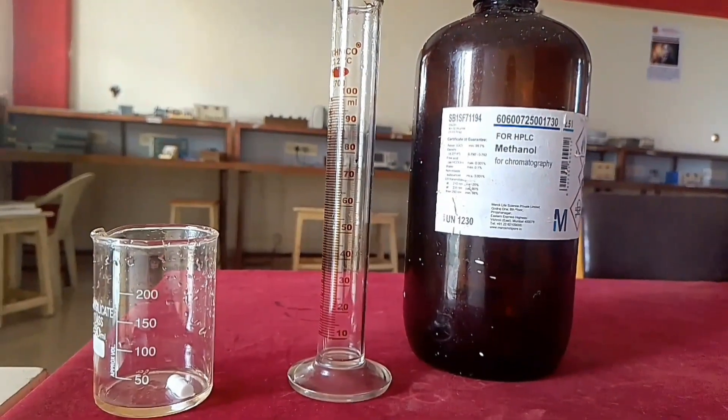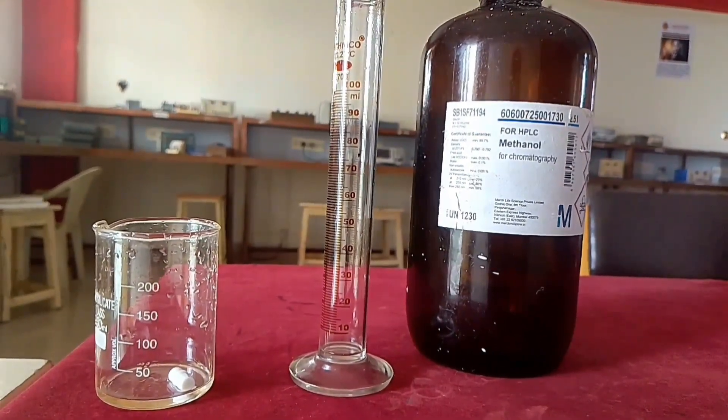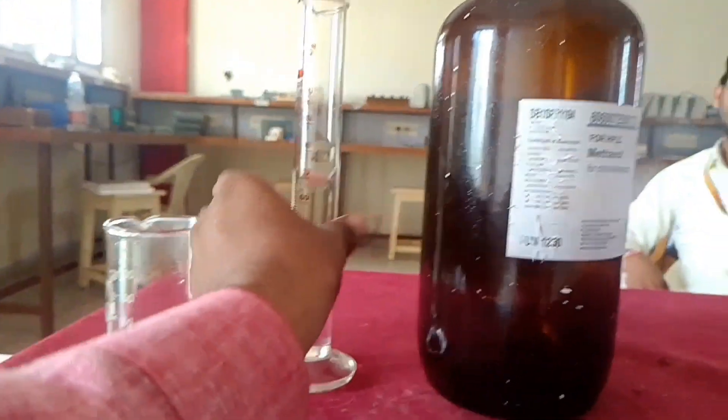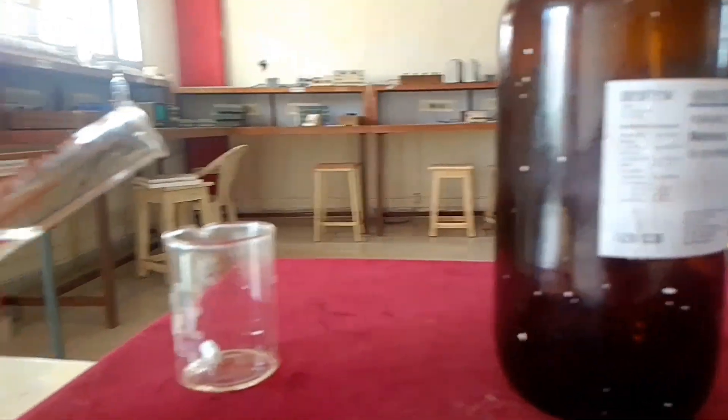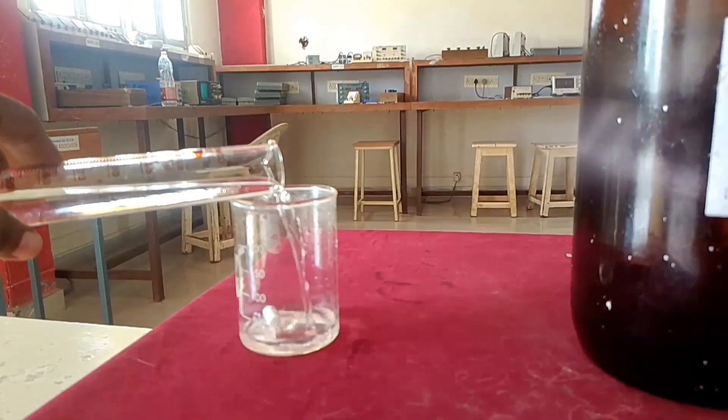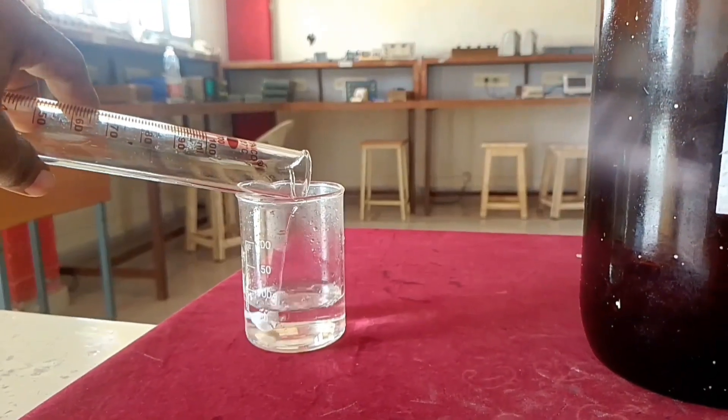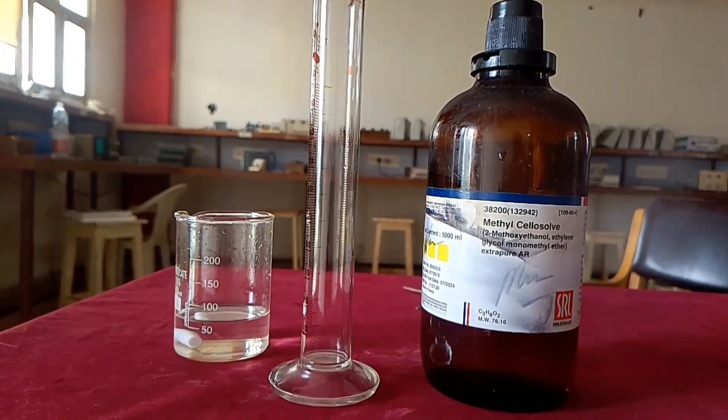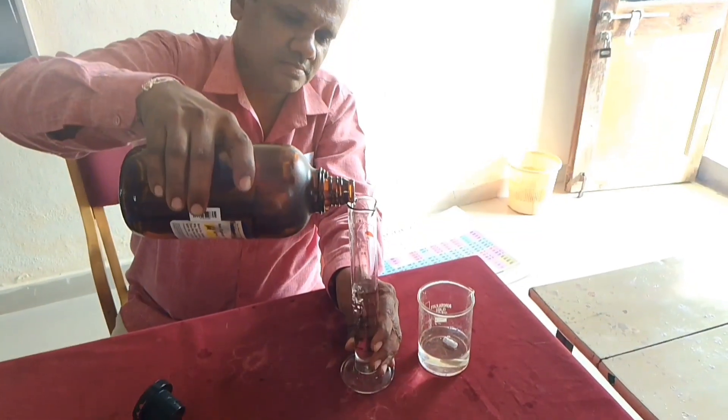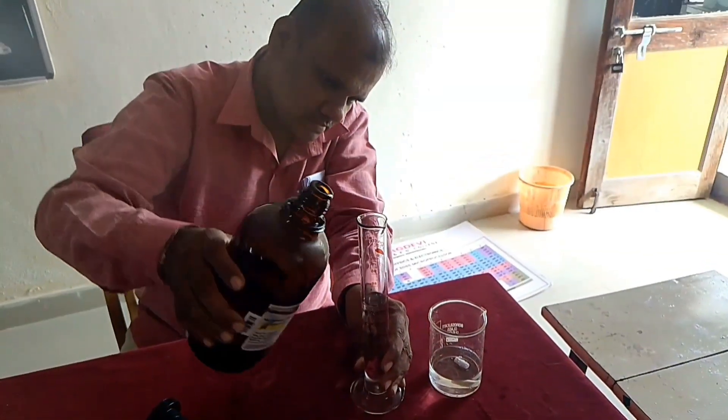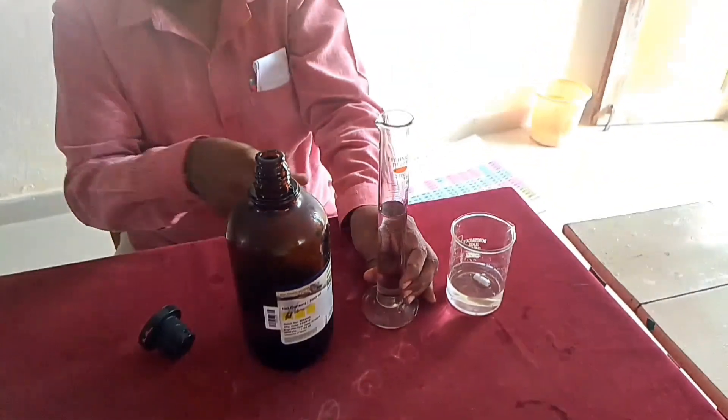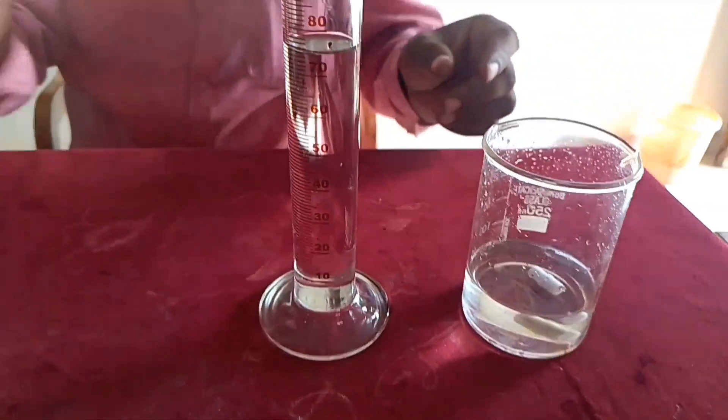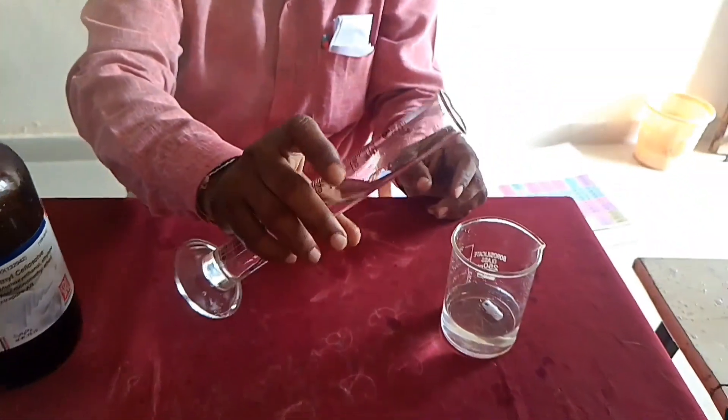Here I am going to take the blending of two solvents: one solvent is methanol, another is 2-methoxyethanol which is also known as methyl cellosolve. With the help of a measuring jar I am going to take 75 ml of methanol. The rest 75 ml is 2-methoxyethanol, so 75 ml of methyl cellosolve is added to the beaker which is already containing 75 ml of methanol.